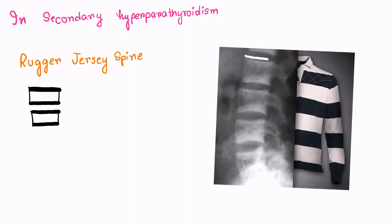In secondary hyperparathyroidism, there is a classical finding in the X-ray known as rugger jersey spine. Here, the end plate of the vertebral column is sclerosed and it appears like the jersey the rugby player wears. That's why it is called rugger jersey spine. See this end plate sclerosis of the vertebral column.